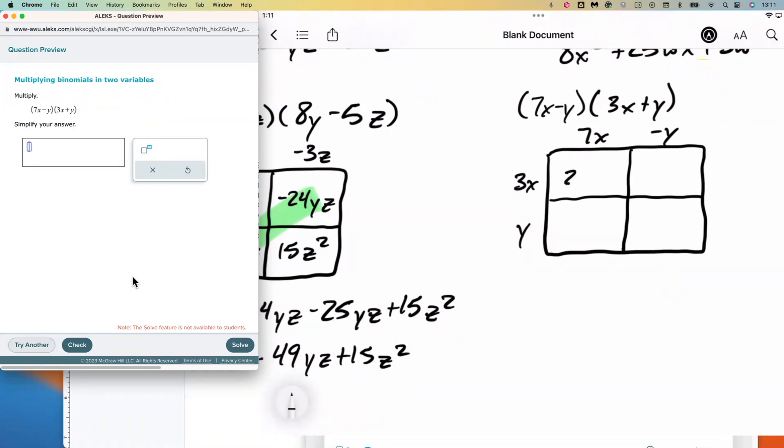So three times seven is twenty-seven x². Three times negative one is negative 3xy. Seven times one is 7xy.